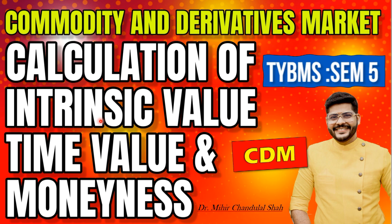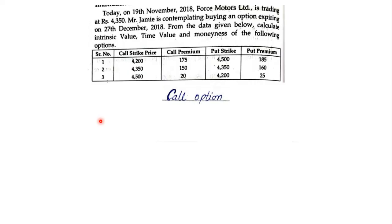This is a very important topic from the exam point of view. Now the first question — I'll read it first. Today on 19th November 2018, Force Motor Limited is trading at rupees 4350. Mr. Jamie is contemplating buying an option expiring on 27th December 2018.